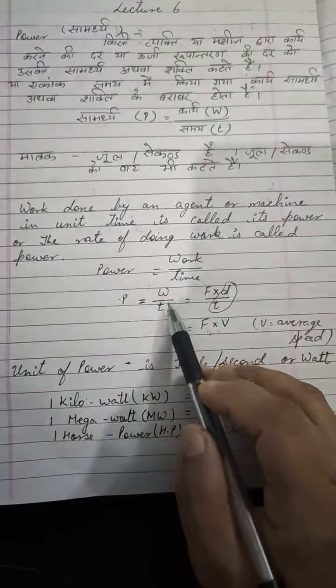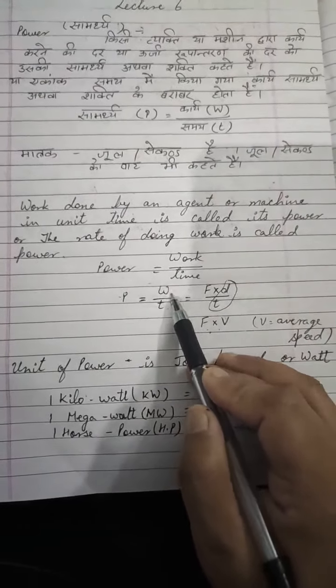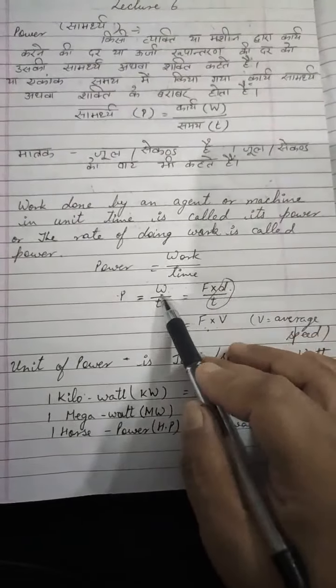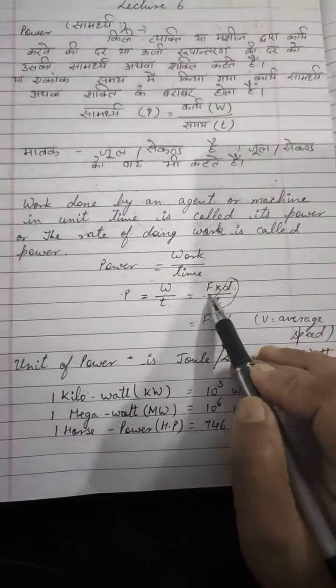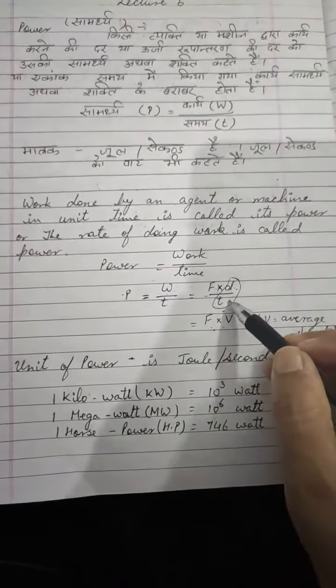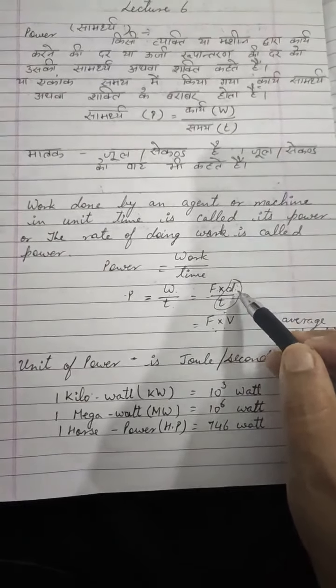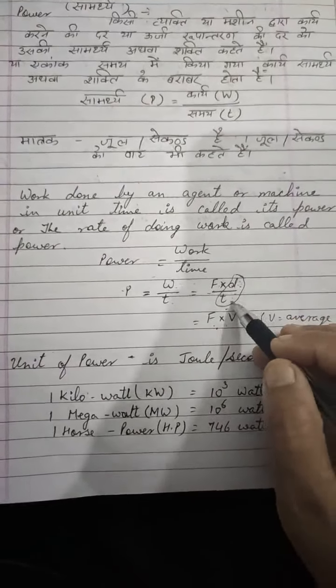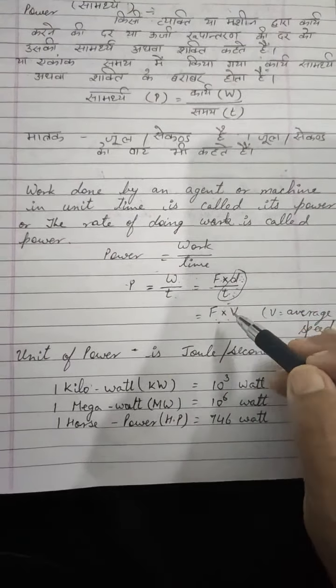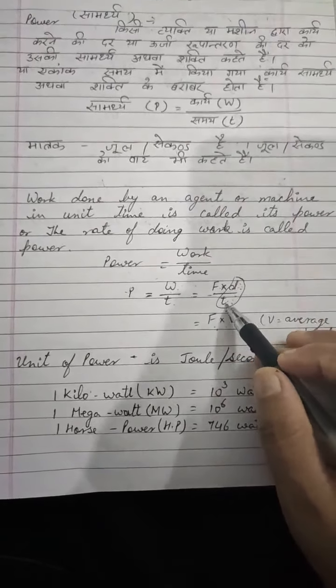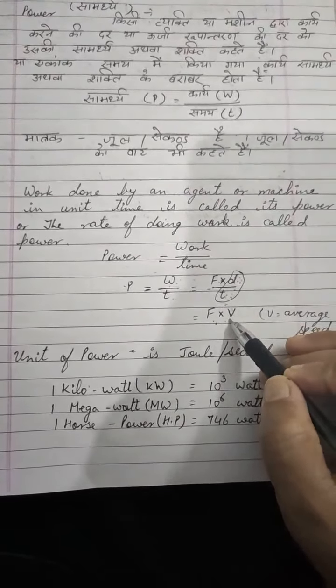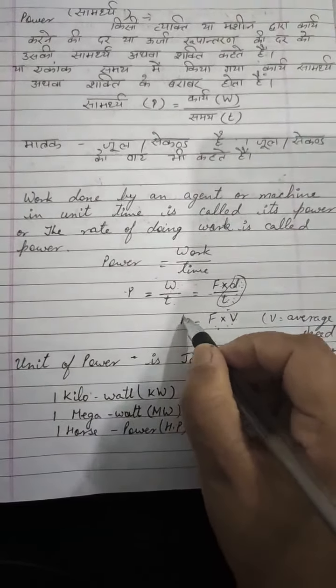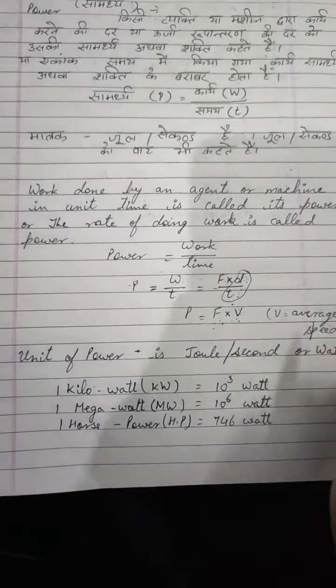Power is equals to work upon time and you all know that work is equals to force into displacement. So work is equals to force into displacement upon time. Speed or velocity is equals to displacement upon time, so power is equals to force into velocity.